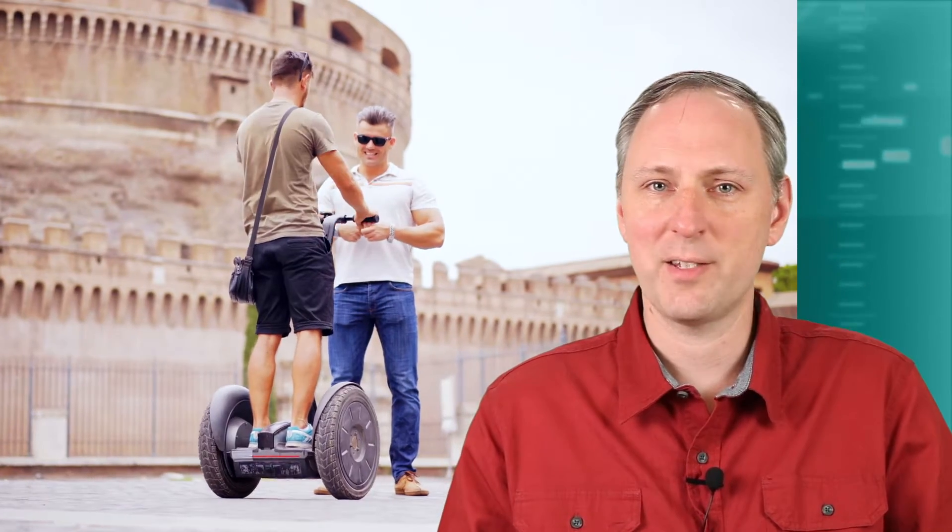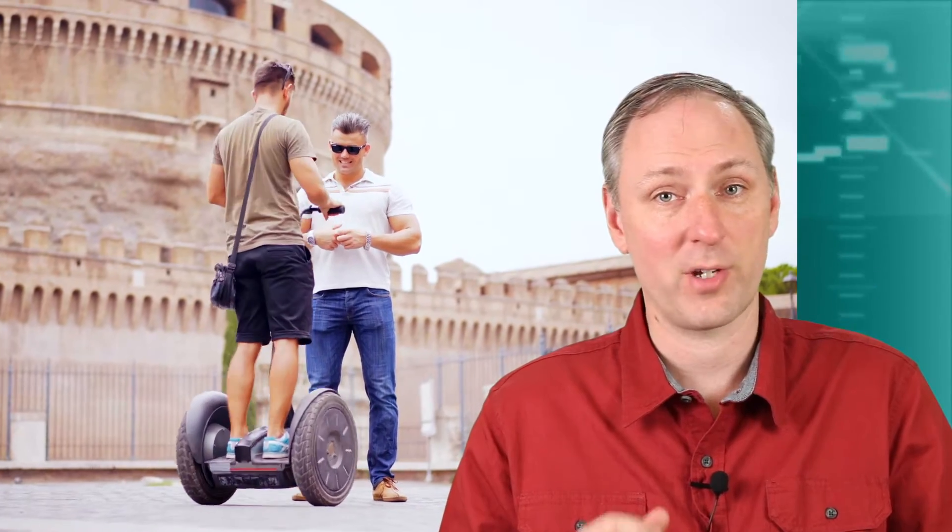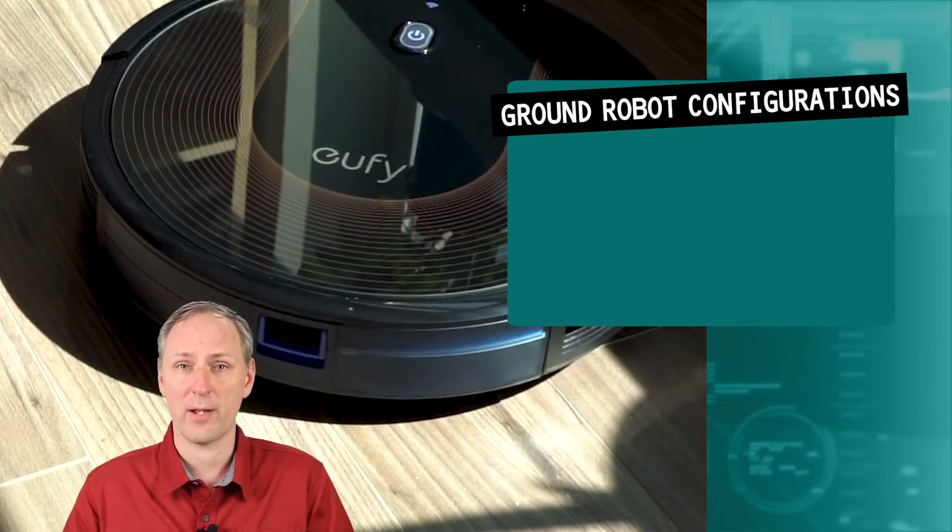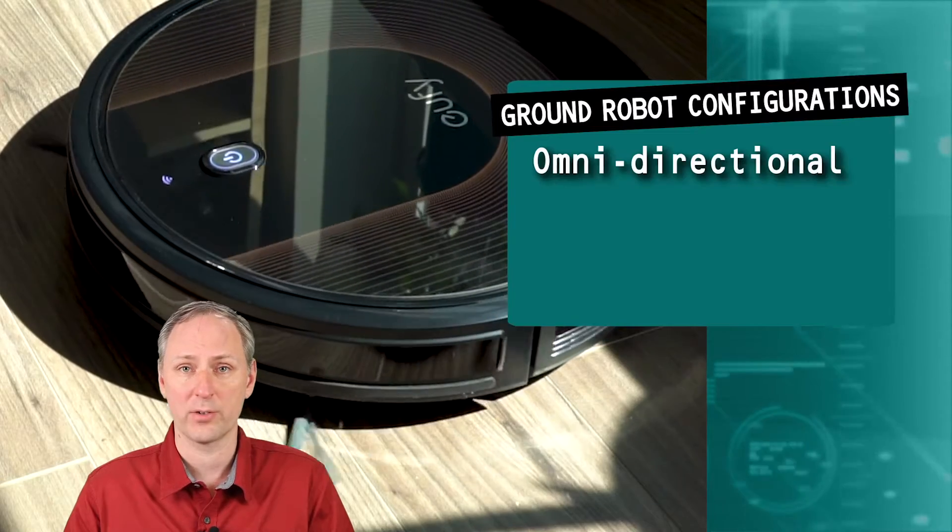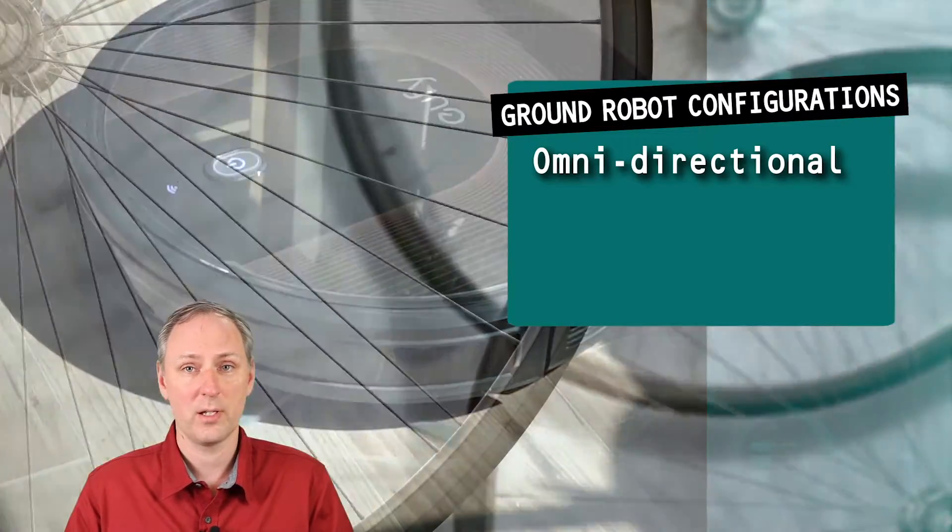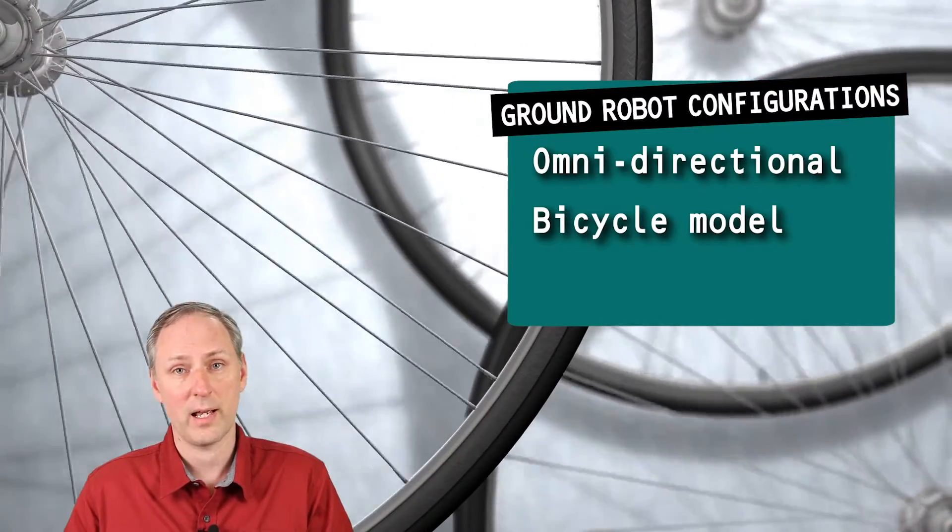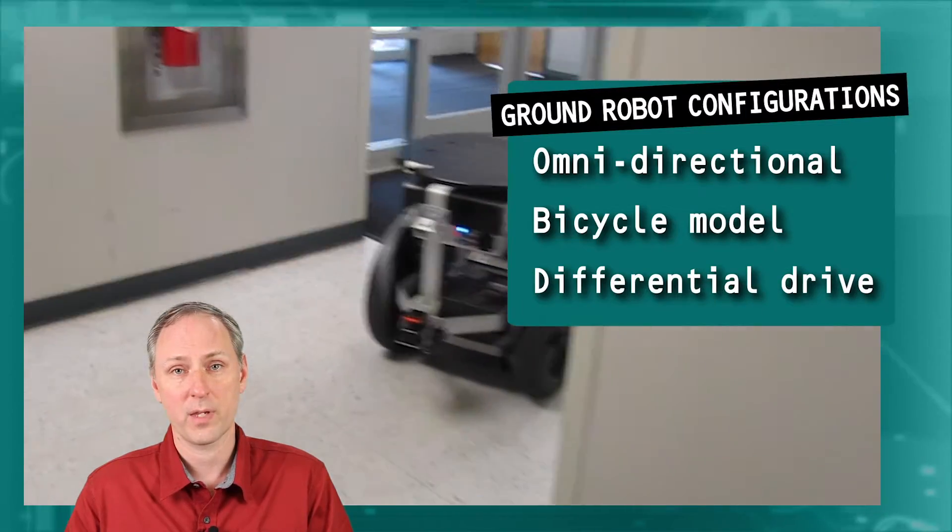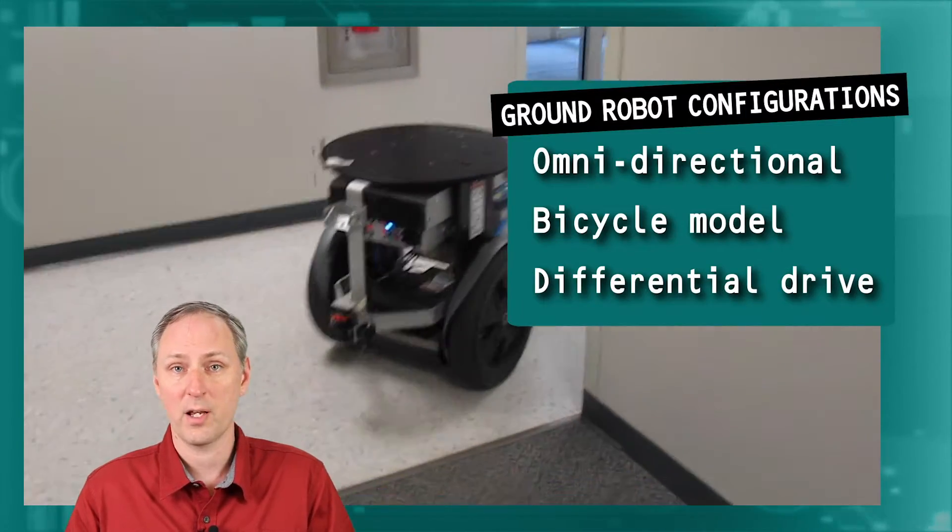While all robots need to move, today we will focus on ground robots. Before we start looking at the math, let's look at the possible wheel configurations these robots can have. In general, these can be broken down into three broad categories: omnidirectional, bicycle model, and differential drive. The type of wheel configuration affects how the robot can move. Hey robot, can you draw a circle?